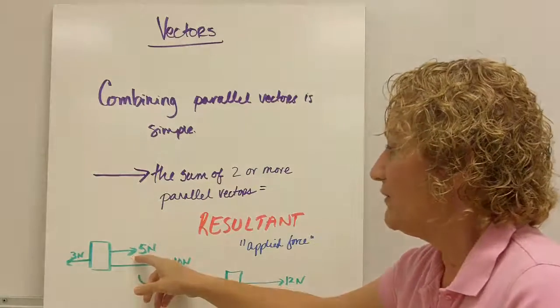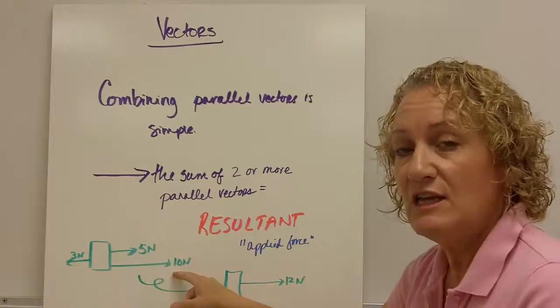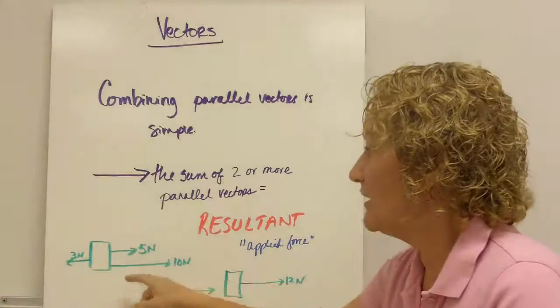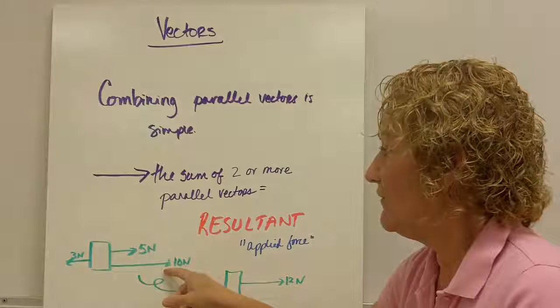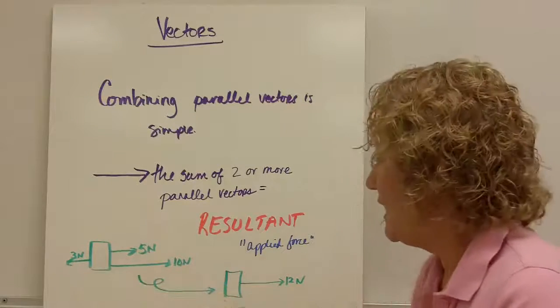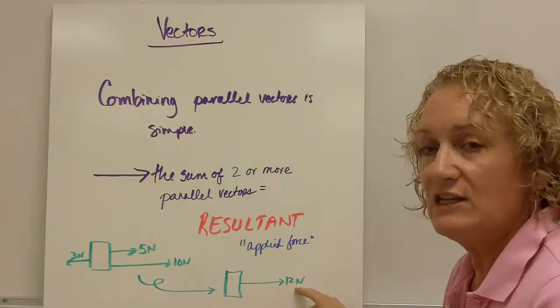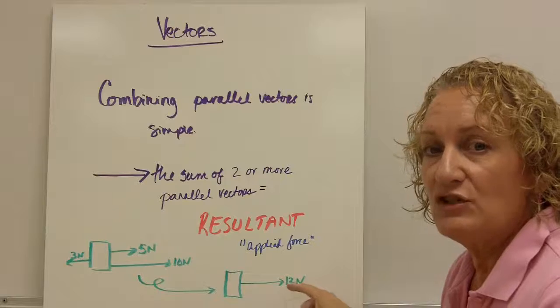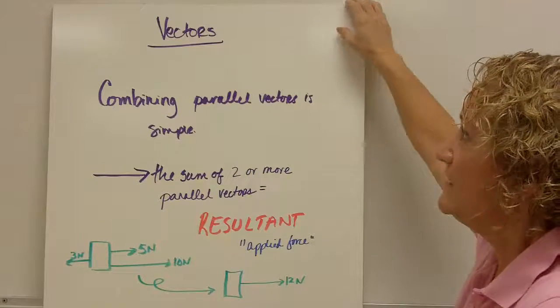Let's look at an example. If I have a box that's being pulled with 5 newtons and 10 newtons to the right, and 3 newtons to the left, I can add 5 and 10 and get 15, subtract off 3, and my resultant force is 12 newtons to the right. So parallel vectors, really easy to put together.